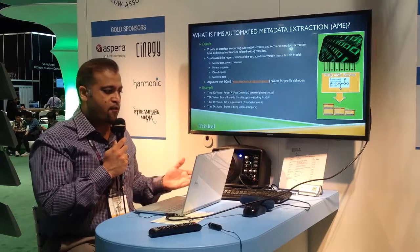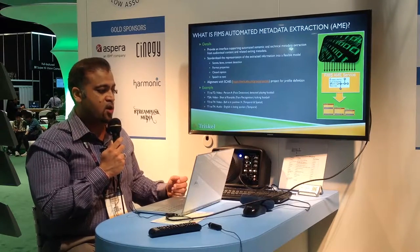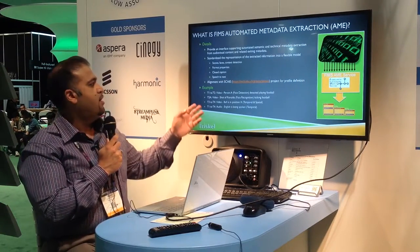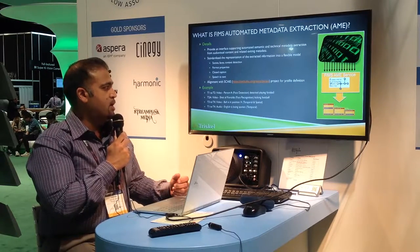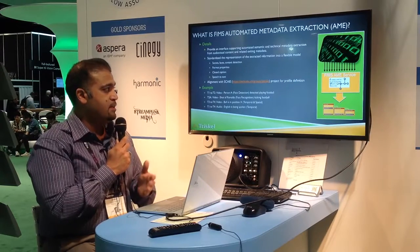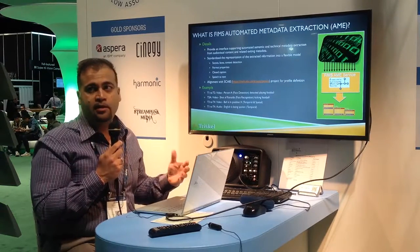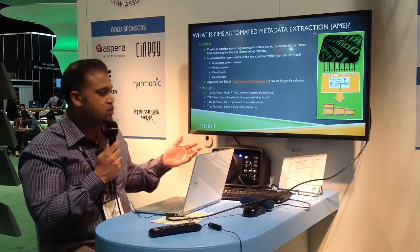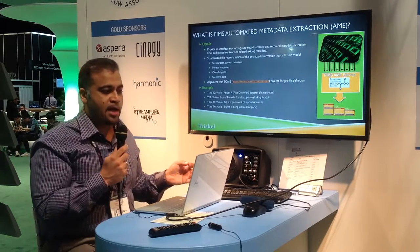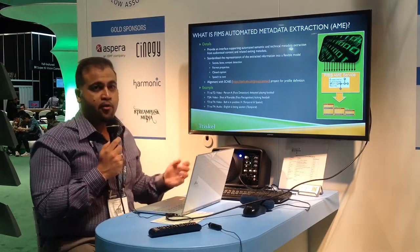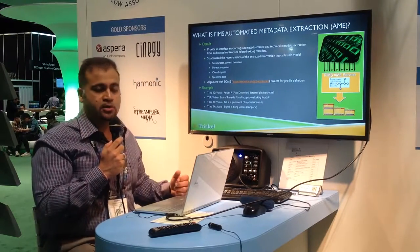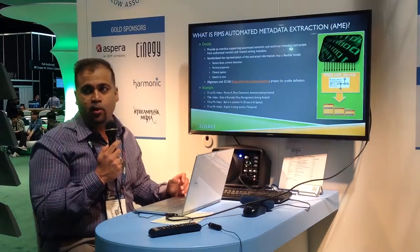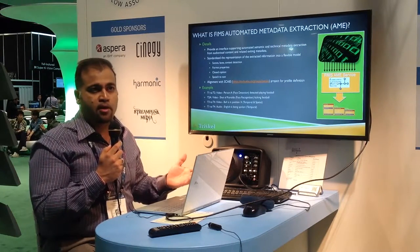A certain example of AME is scene detection. One example could be from timecode one to timecode two, you could have a person where the face is detected and the person is playing football. That's information gathered automatically from the tool — that's the secret sauce within these tools. You can detect the Ronaldos in there, so if in the future there's any coverage that needs to happen, you can quickly, based on extracting the semantic metadata, leverage this information and gather the content for distribution and monetization.